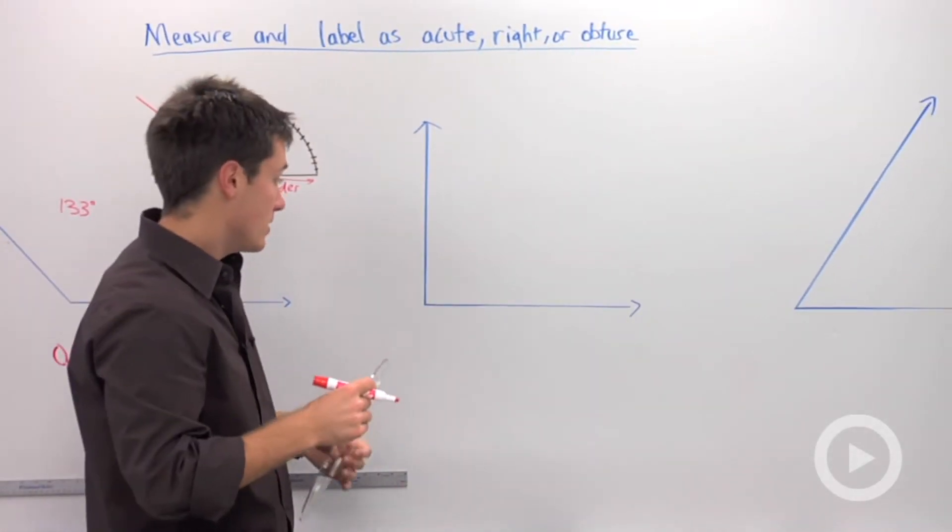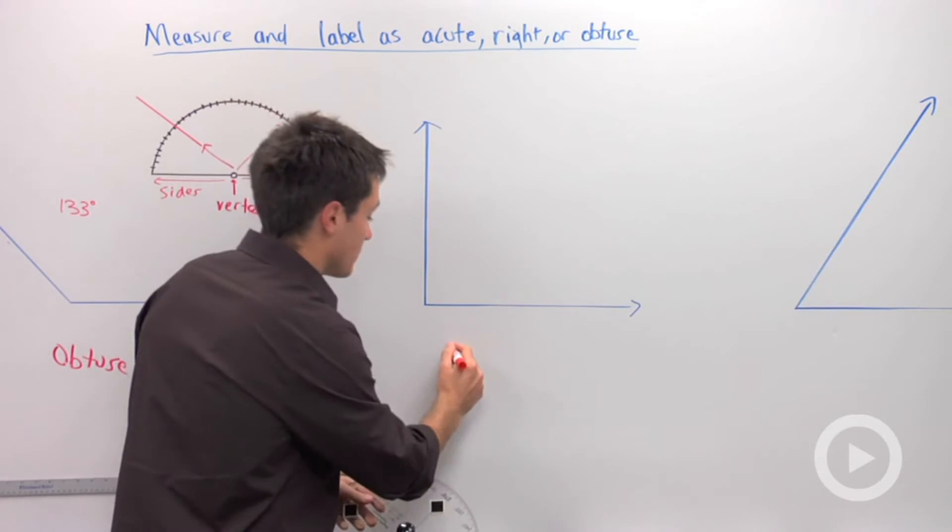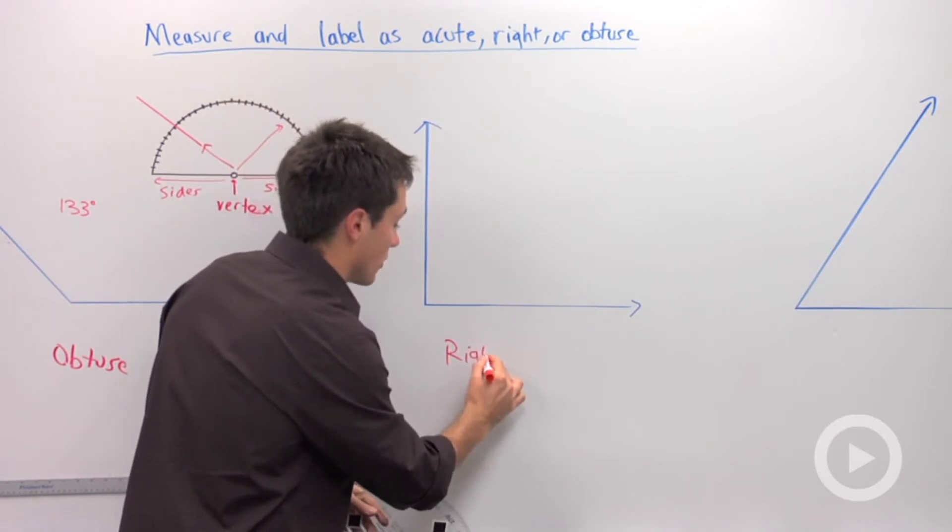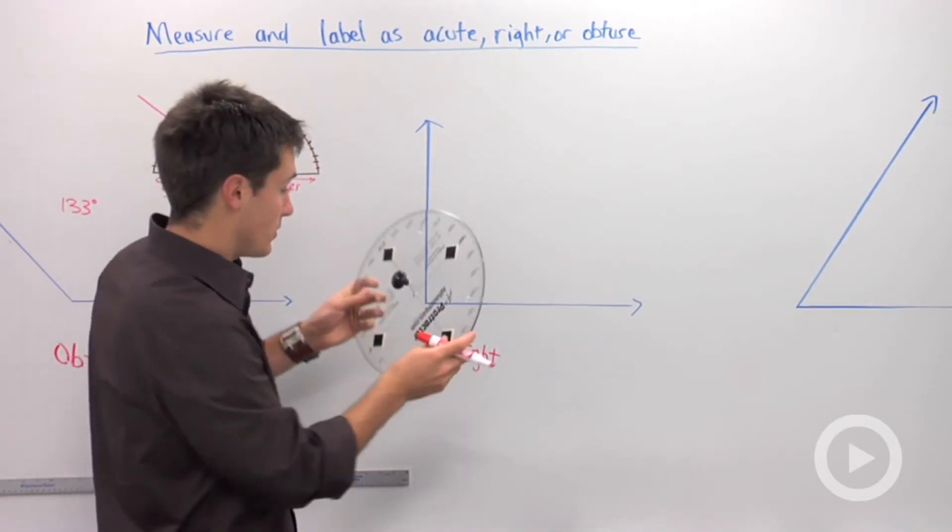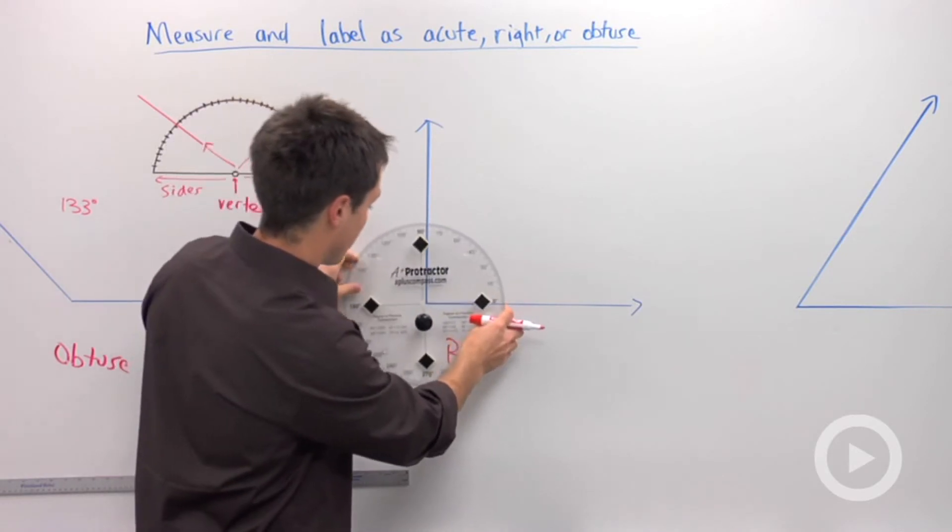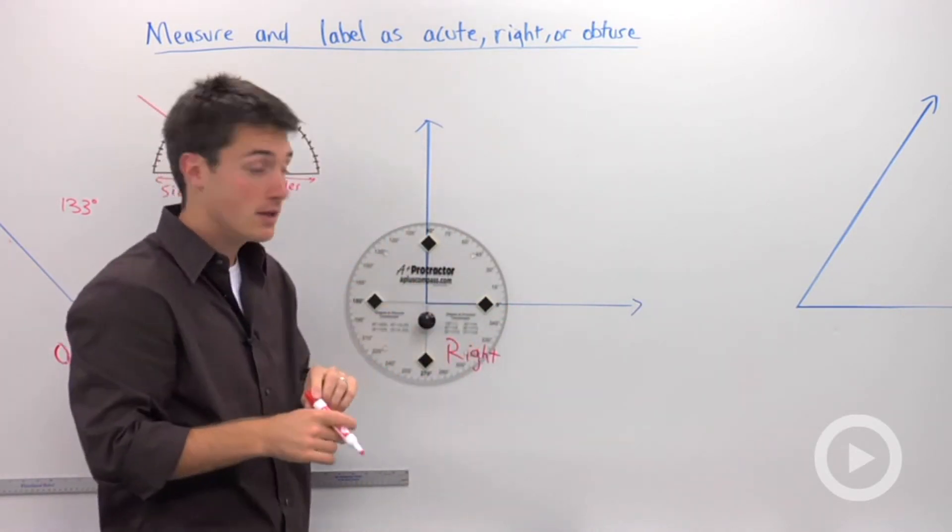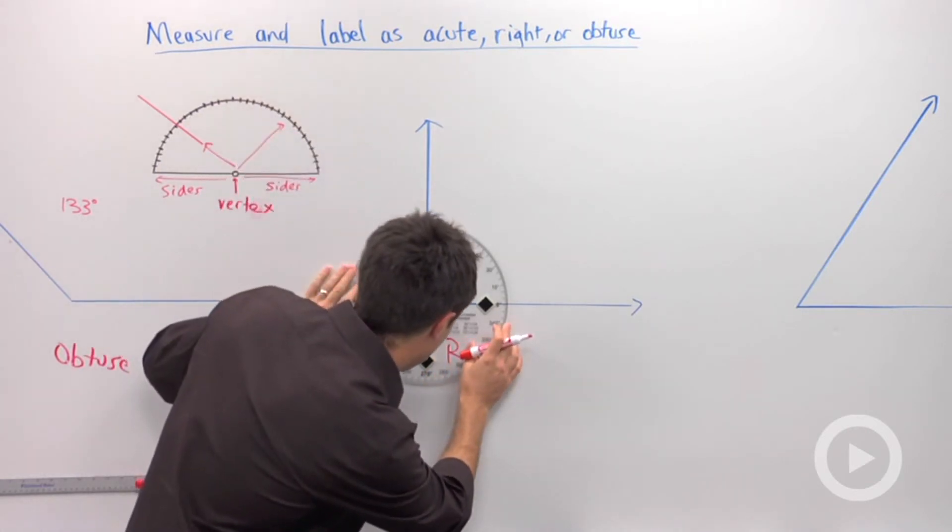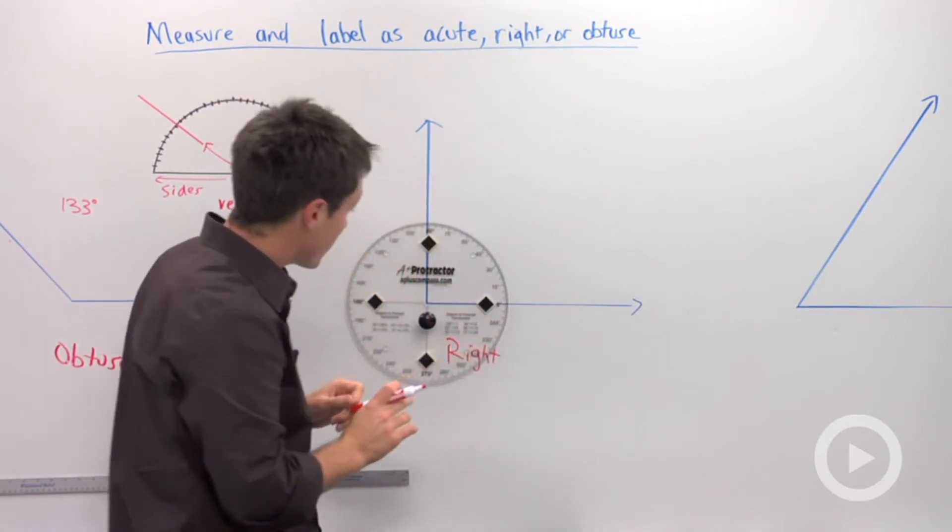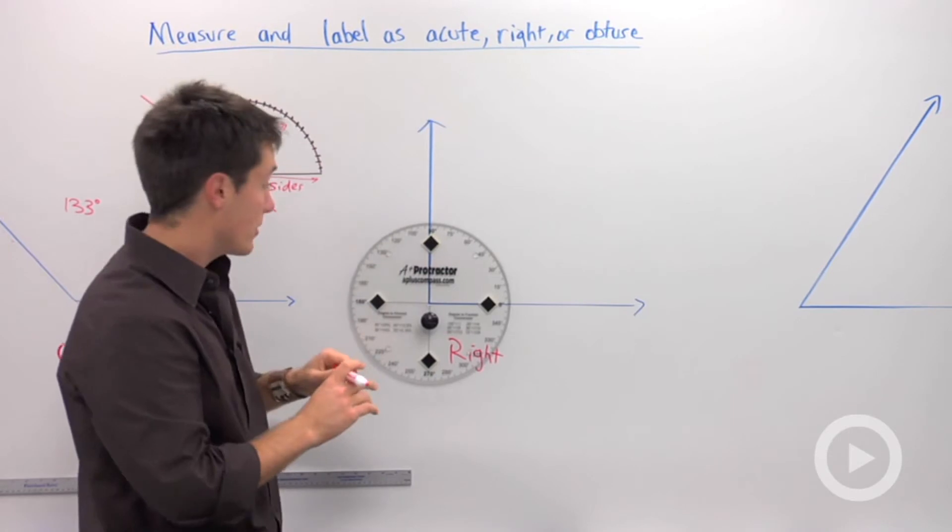So if I measure this angle right here, I'm going to guess that it's right, but I'm not quite sure. So I'm going to put the center of my protractor on the vertex, and I'm going to make sure that one of my bases is aligned.